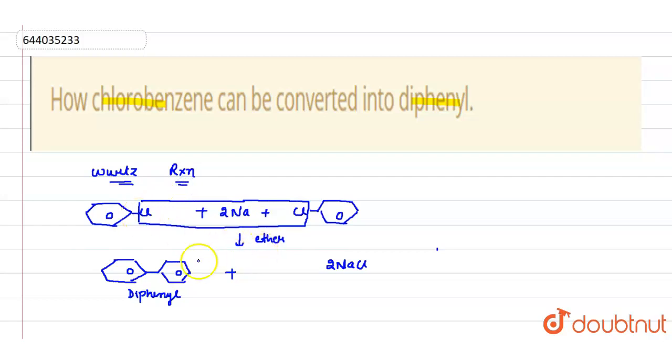And in this, in the presence of dry ether, two diphenyls are formed and these are two moles of chlorobenzene. This is also chlorobenzene.